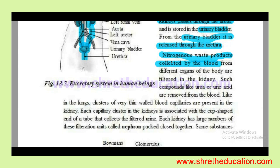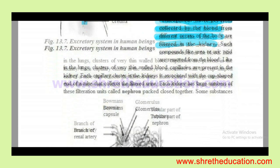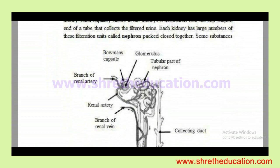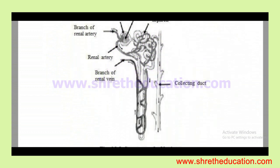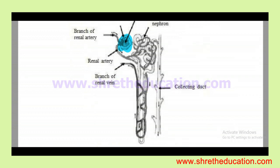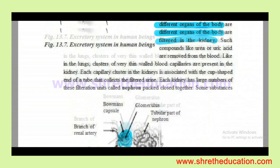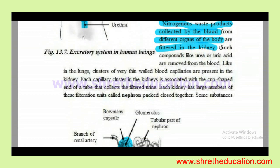Nitrogenous waste is collected by the blood from different organs of the body. All nitrogenous waste is filtered in the kidney. The filtering unit of the kidney is called the nephron.